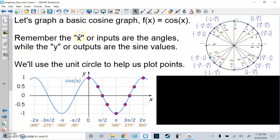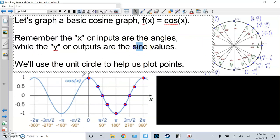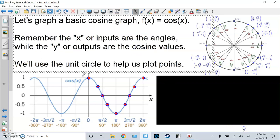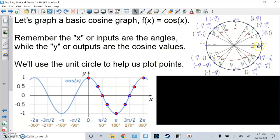The same thing for cosine. Again, x is the angles, y is the cosine values. The unit circle helps plot points. So I go to 0 degrees. Cosine 0, the x value of this is 1, so that's 0, 1. Then I go to a nice point, pi over 3, or 60 degrees, is 1 half.